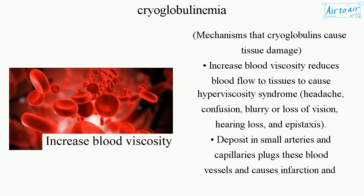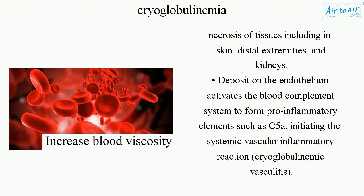Mechanisms by which cryoglobulins cause tissue damage: they increase blood viscosity and reduce blood flow to tissues, causing hyperviscosity syndrome — symptoms include headache, confusion, blurry or loss of vision, hearing loss, and epistaxis. They also deposit in small arteries and capillaries, plugging blood vessels and causing infarction and necrosis of tissues including in skin, distal extremities, and kidneys.